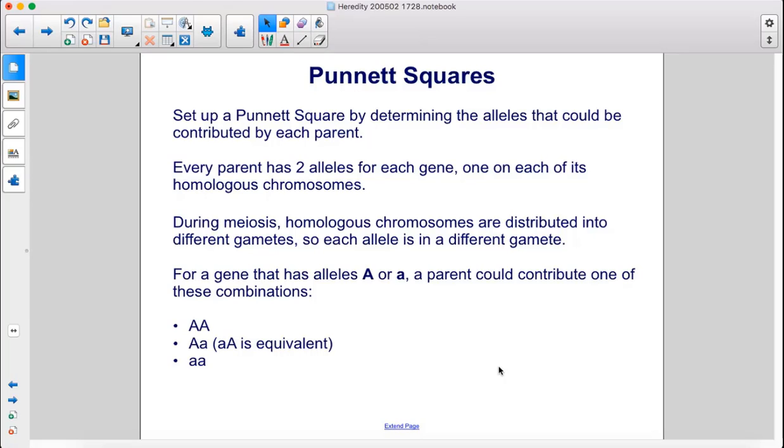So each allele is in a different gamete. For a gene that has alleles capital A or lowercase a, a parent could contribute one of these combinations: both uppercase A's, a mix of uppercase and lowercase, or two lowercase a's.